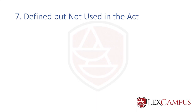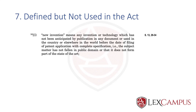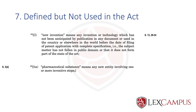The seventh and last type is defined but not used in the act. For instance, section 2(1)(l) defines 'new invention,' but the phrase 'new invention' as two words together is not used anywhere in the act. Similarly, section 2(1)(ta) defines 'pharmaceutical substance' as an entity involving one or more inventive steps, but pharmaceutical substance is not used anywhere in the Patents Act though it is defined.